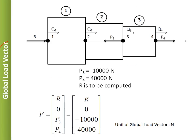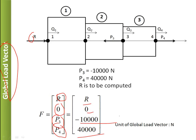The global load vector includes body force, traction force, and externally applied point loads. In this problem, there is no body force or traction force, so only point loads are considered. The reaction R is at node 1 (fixed end); there is no load at node 2; node 3 has P3 = -10,000 N; node 4 has P4 = +40,000 N. So the global load vector is {R, 0, -10000, 40000} in Newtons.